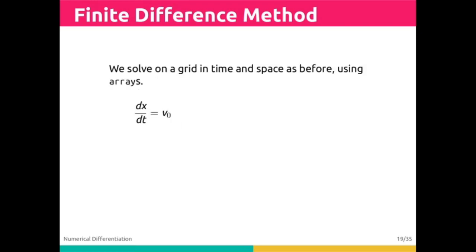We solve on a grid in time and space as before, using arrays. We've done this already if you think about some of the situations with linspace. In this case, we have a dx dt, which is of course the definition of velocity.